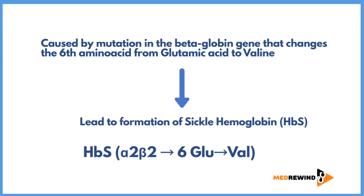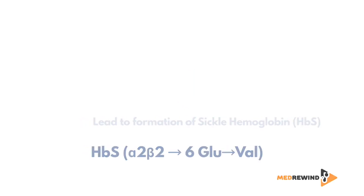Today's topic is sickle cell syndrome — called a syndrome because it is a group of symptoms consistently occurring together. It is caused by a mutation in the beta globin gene that changes the sixth amino acid from glutamic acid to valine. This leads to formation of sickle hemoglobin, HbS, which is alpha-2 beta-2, where in the sixth position glutamine goes and valine is welcomed.